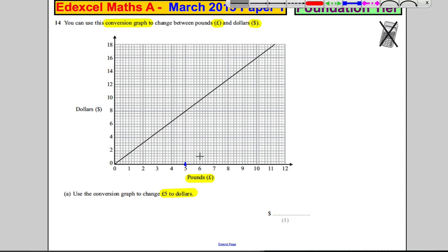You must draw the lines in the exam to show the examiner - it's called interpolation - how you got the answer from the graph. So you draw a line up, you draw a line across, and it's 8 dollars. Write down 8 dollars; it gives you the dollar sign for you.